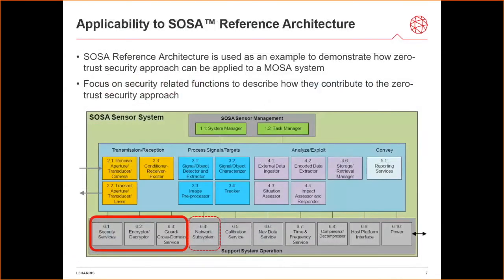Now we'll transition to discuss how a zero-trust approach can be applied to a MOSA-aligned system. For this analysis, I will use SOSA as an example. The diagram shows the SOSA architecture and associated modules. The focus here is aligning the security-related modules to the approach — namely the security services, the decryptor, and the guard cross-domain service. The network subsystem is also related to support the network segmentations we'll discuss in later slides.